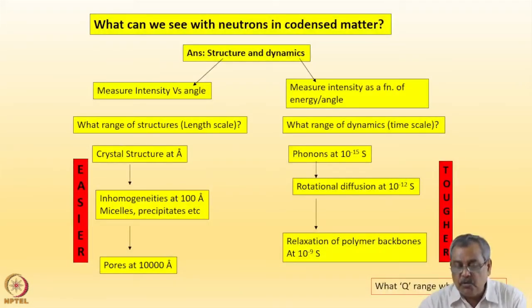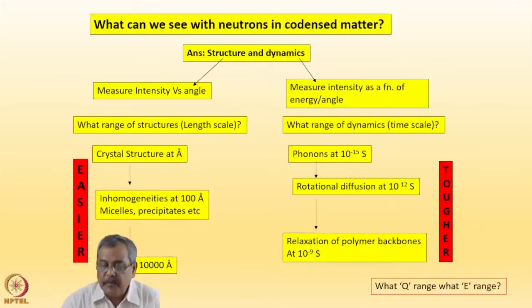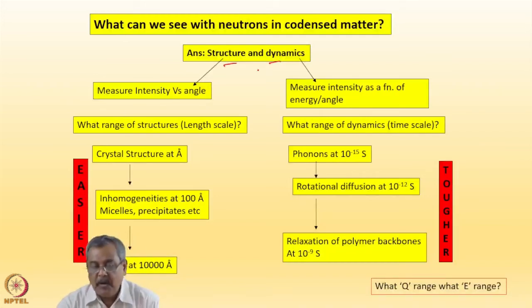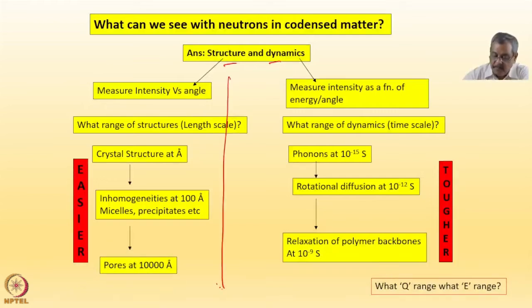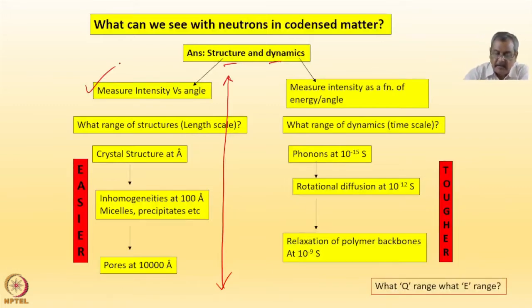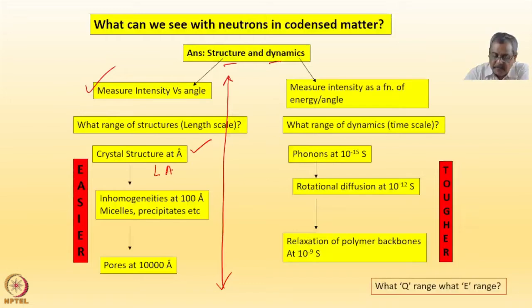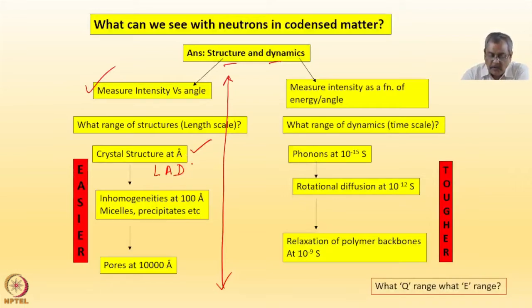Earlier I had shown this tree to you saying what we can see with neutrons in condensed matter - structure and dynamics. Now I have finished this part of the talk which is longer and possibly more used. So we measure intensity versus angle, and when it comes to what range of structures we said crystal structures, liquid and amorphous diffractometers - these are all short range structures in the angstrom range.